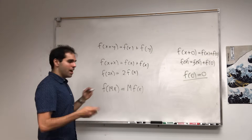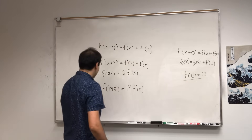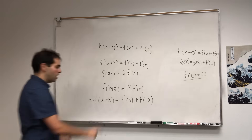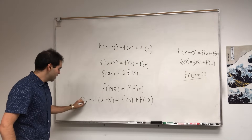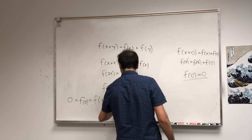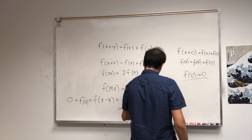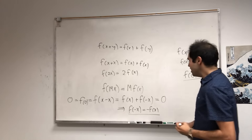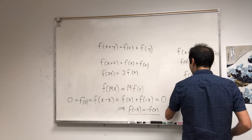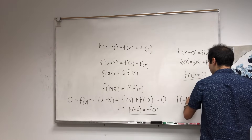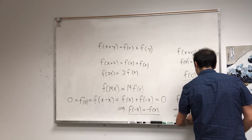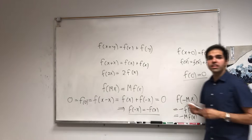Moreover, let y = -x: f(x + (-x)) = f(x) + f(-x). Now f(0) = 0, so f(x) + f(-x) = 0. This means f is odd: f(-x) = -f(x). And this tells us that the property also works for negative integers: f(-mx) = -f(mx) = -m·f(x), so it holds for all integers.